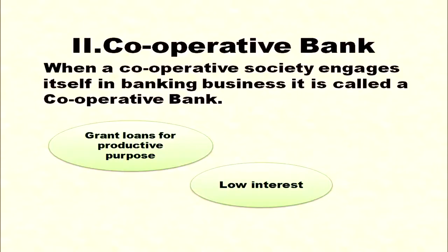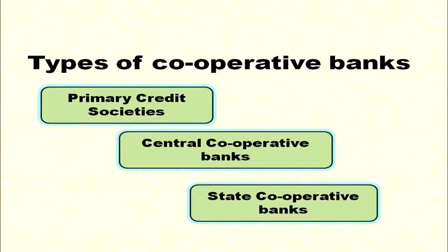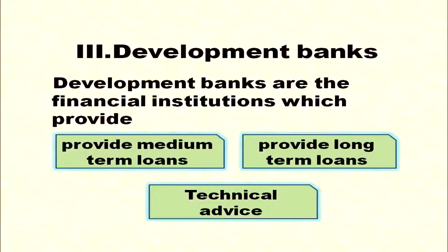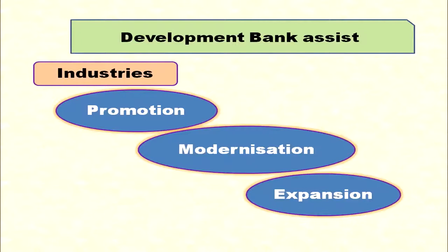When a cooperative society engages in banking business, it is a cooperative bank. These banks grant loans for productive purposes at a low interest rate. Types of cooperative banks include primary credit societies, central cooperative banks, and state cooperative banks. Development banks are financial institutions that provide both medium-term and long-term loans, provide technical advice to business organizations, and assist industries in promotion, modernization, and expansion.